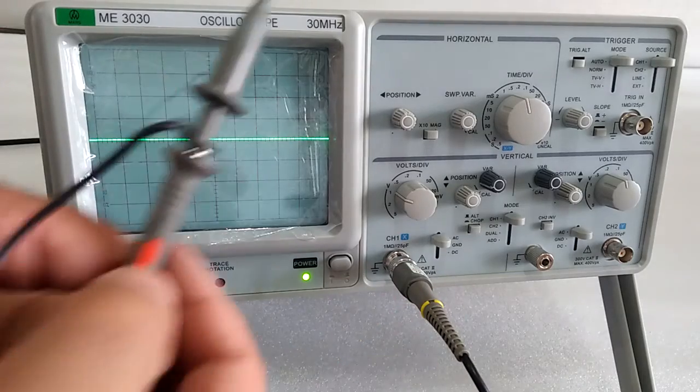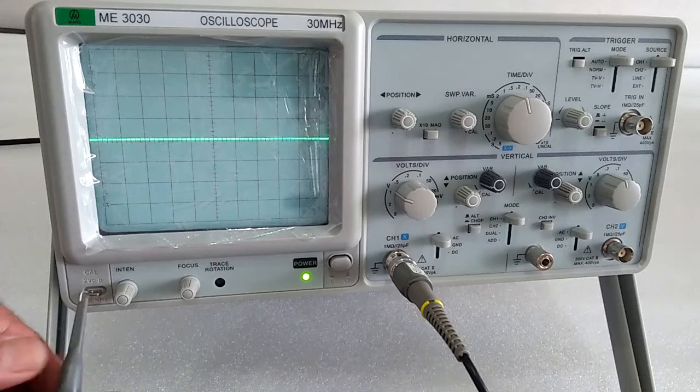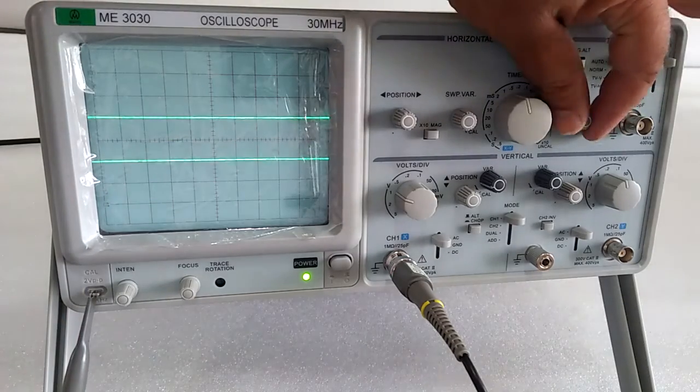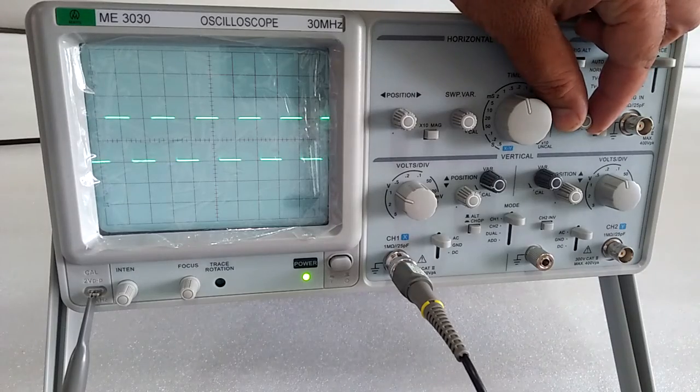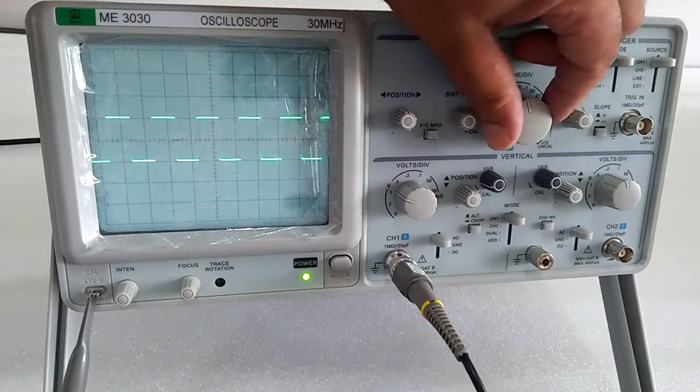Connect the probe and make it 1:1. Use the internal signal. If it is not stable like that, you have to use the level control to make it stable. Use the amplitude and frequency controls.